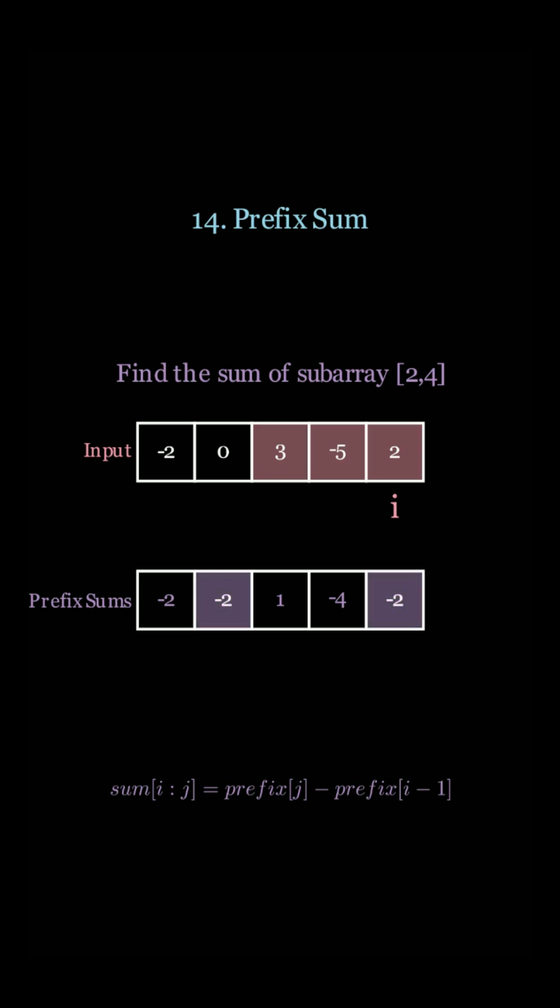This is just going to be prefix j minus prefix of i minus 1. Negative 2 minus negative 2 is indeed 0.